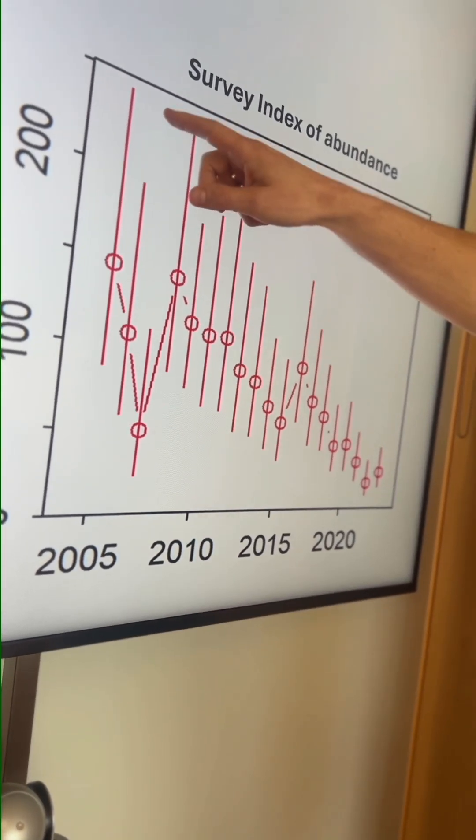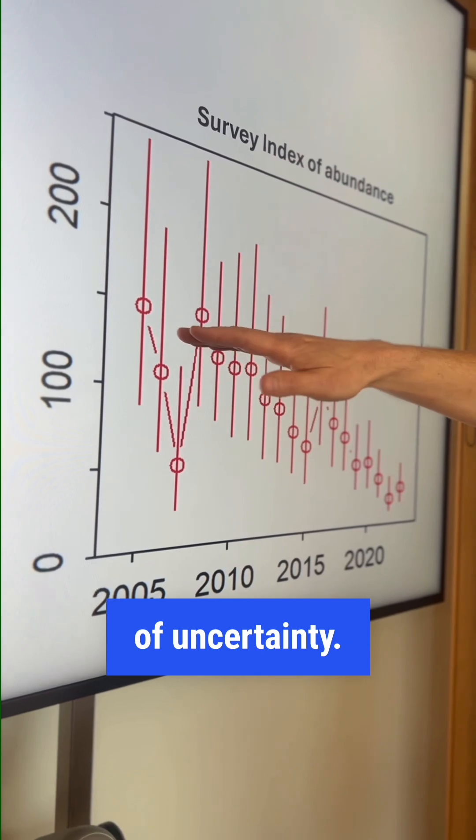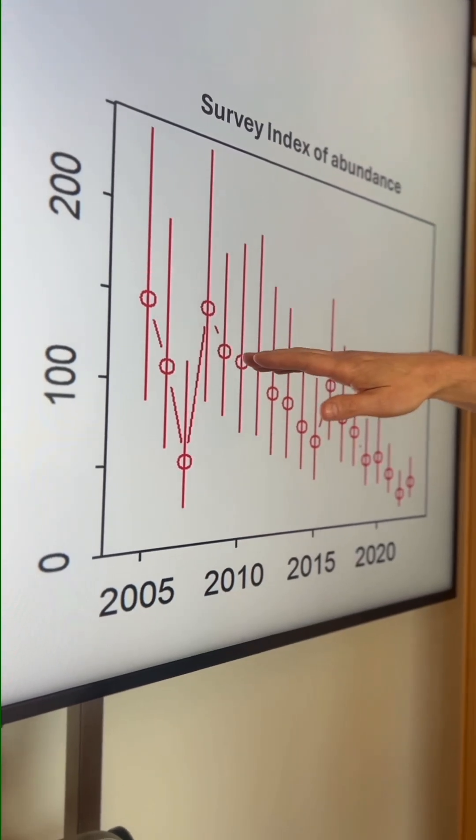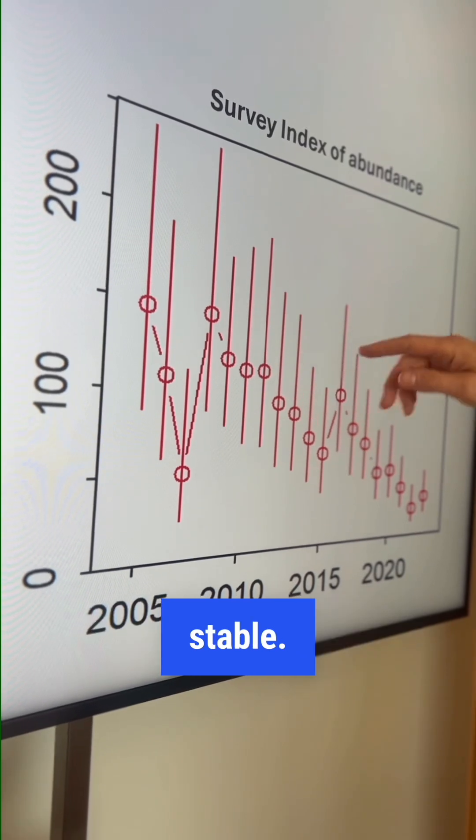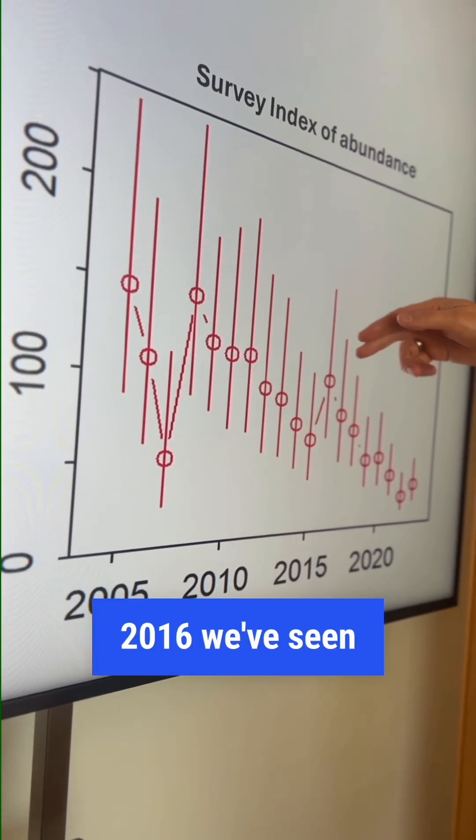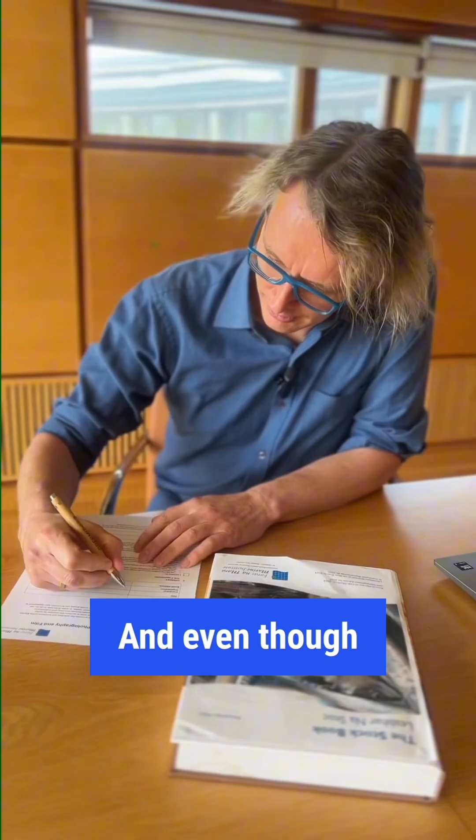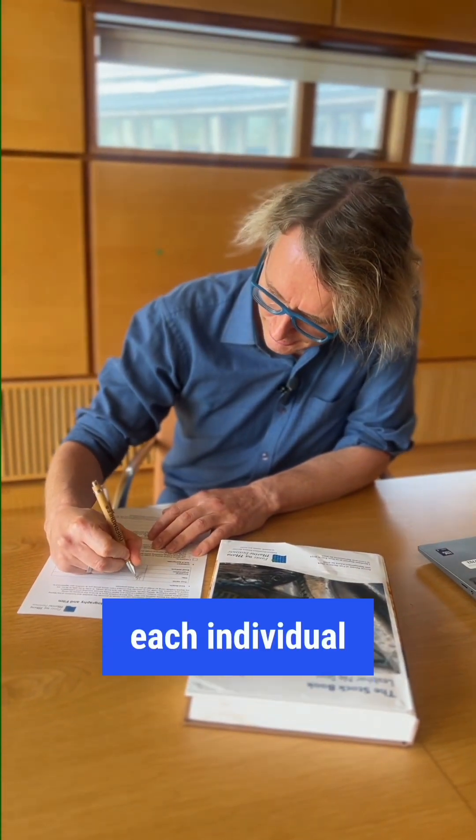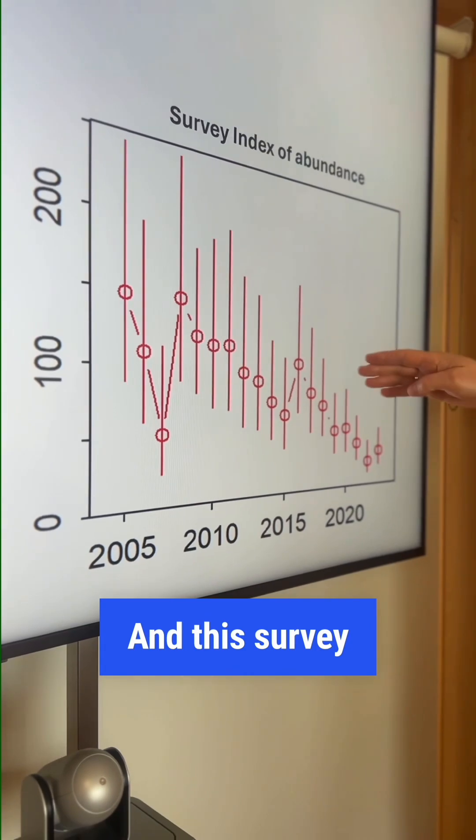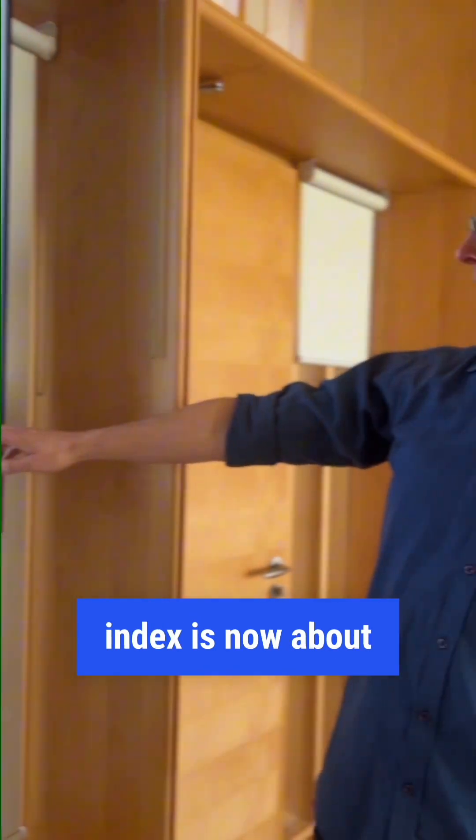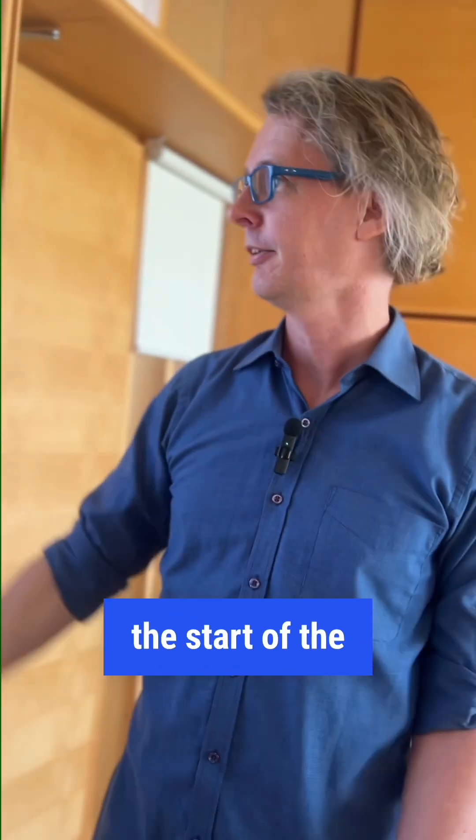Despite the large amount of uncertainty, you can see that at the start of the time series, around the early 2000s, it was relatively stable. Really since 2016, we've seen a very strong declining trend, and even though each individual year is quite uncertain, that trend is quite strong. This survey index is now about five times lower than it was at the start.